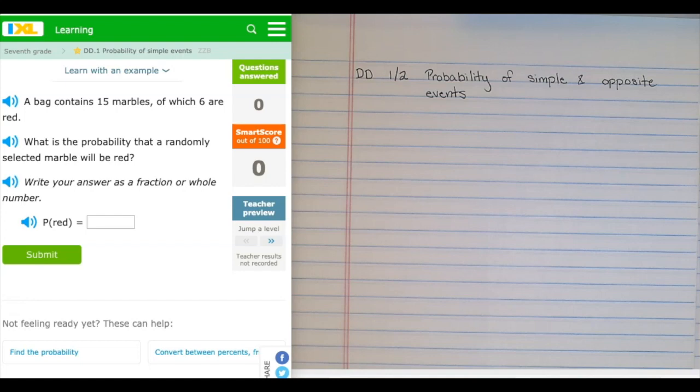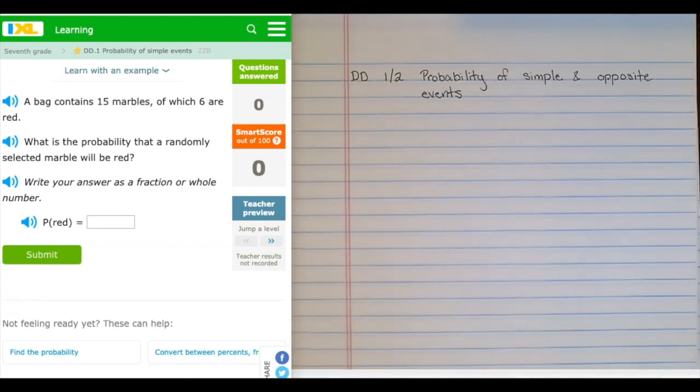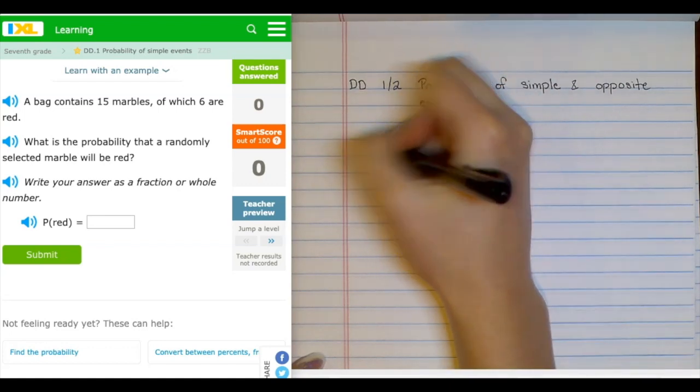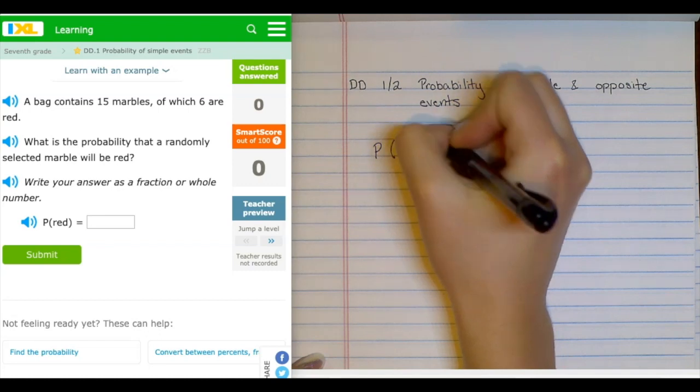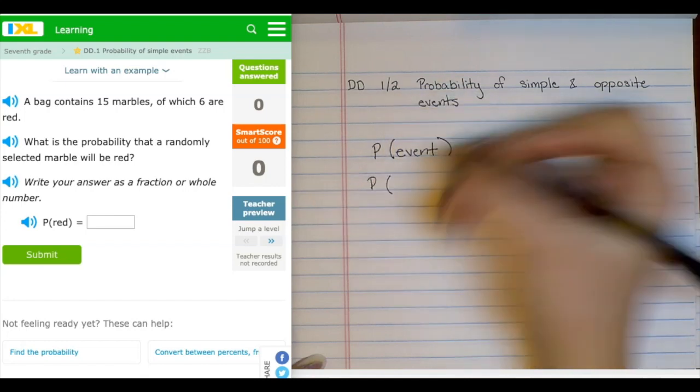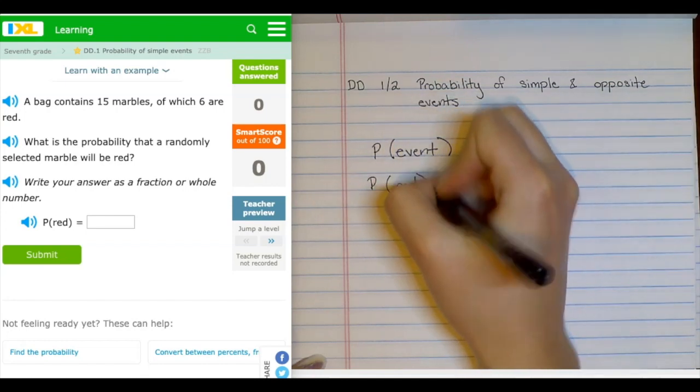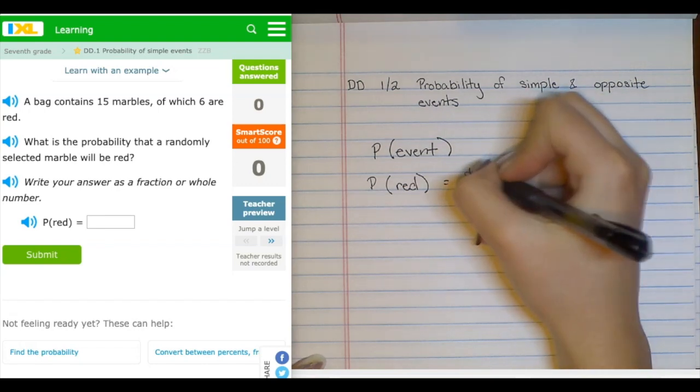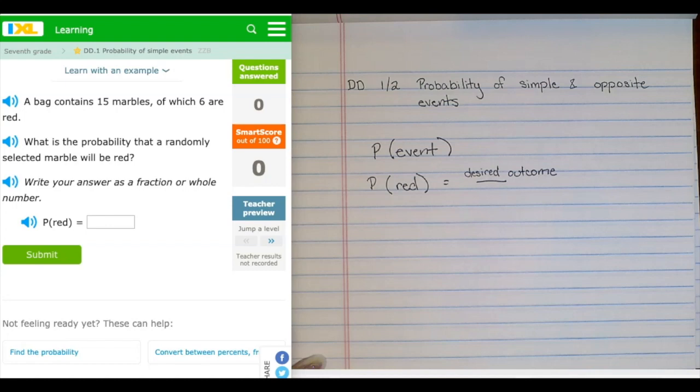We are looking at probability on iExcel, and assignments DD1 and DD2 are incredibly similar, so I'm gonna push them together into this one video. This first question says a bag contains 15 marbles of which 6 are red. What is the probability that a randomly selected marble will be red? For any probability, I'm gonna have this notation capital P of event, and that's the probability of an event happening. So if I'm looking at this particular example, it'll be the probability of drawing a red marble, and all of my probability statements will look like a fraction with the desired outcome on top and the total outcomes on bottom.